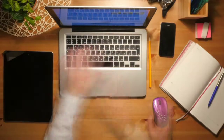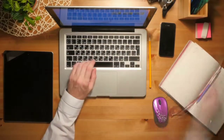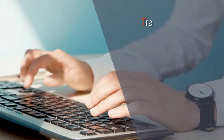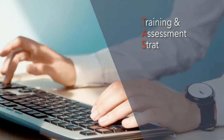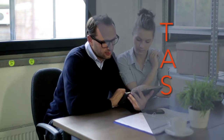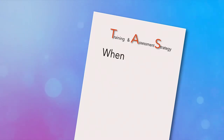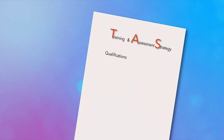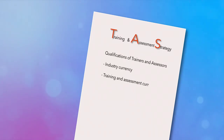Lastly, you need to design the structure of the learning program. The structure is usually developed within the training and assessment strategy of your registered training organisation, known as a TAS. This document identifies which part of the learning happens when, where, how and why. It also stipulates who is qualified to train the individuals specified within the scope of the training need.